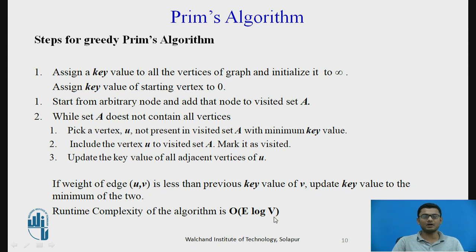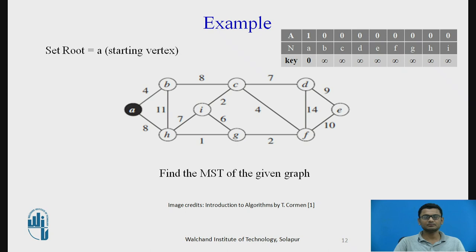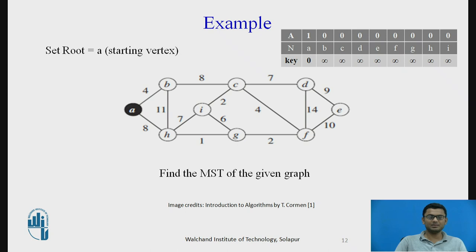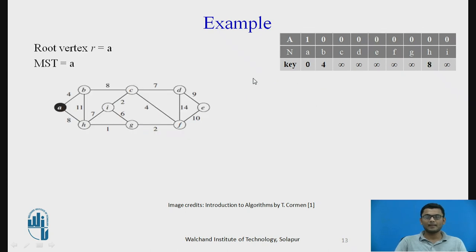Now we shall see an example of Prim's algorithm on a weighted graph. The example has nodes from A to I with all edges weighted. We start determining the minimum spanning tree from node A. The key value for node A is 0 while all other nodes are initialized to infinity. In the visited set, A is set to 1 (visited) and the rest are unvisited (0). We update the key values of B and H, which are adjacent to A, with weights 4 and 8 respectively.